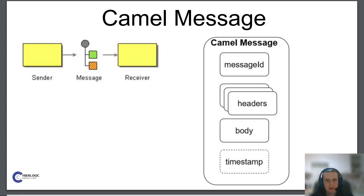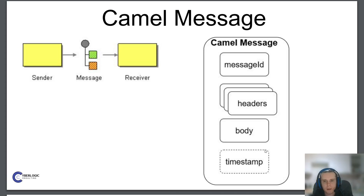Some components provide their own message IDs — for example, the JMS component fills the message ID with the JMS ID of the incoming message. Lastly, a Camel message may or may not have a timestamp. Some components like Kafka and JMS fill this timestamp on event or message received, but unlike message ID, this timestamp is not generated by Camel automatically — it must be provided by a component.